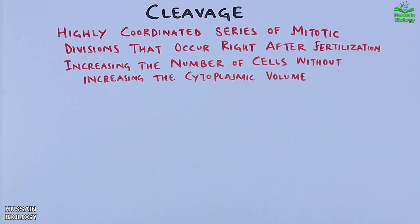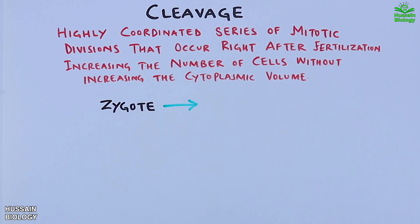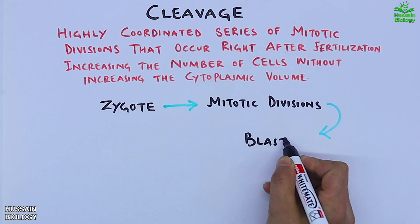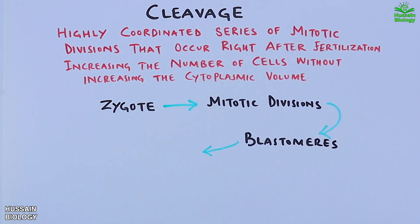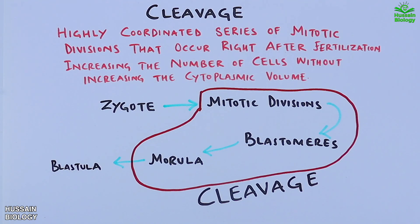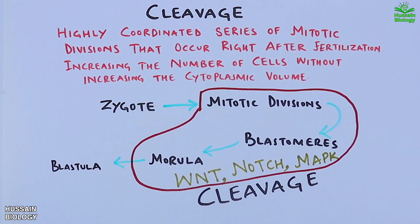When we get the formation of the zygote after fertilization, this zygote is driven into mitotic divisions. That gives us blastomeres, then morula, and then blastula. All these cleavages occur between the zygote and blastula stage. It must be noted that cleavage involves three important signaling pathways: WNT pathway, NOG pathway, and MAPK signaling pathway.